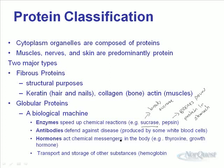Antibodies are another type of globular protein. They defend against disease and are produced by some white blood cells. Some of our hormones are also proteins, and these hormones act as chemical messages within the body. Thyroxine and growth hormone send signals throughout our body that something is supposed to happen. Growth hormone, released from the pituitary gland, triggers the body to grow and is more prevalent in young individuals under 18. Thyroxine is involved in metabolism — people who produce more thyroxine tend to be thinner and more active. Another type of globular protein is involved in transport and storage; hemoglobin, for example, is a protein that transports oxygen throughout the body.